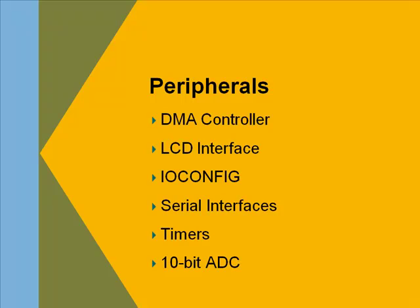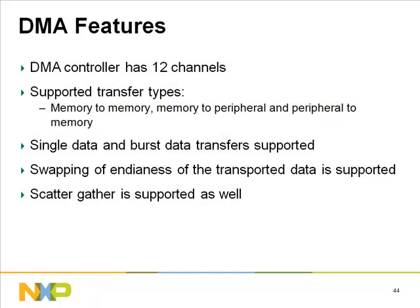The 12-channel DMA supports memory-to-memory, memory-to-peripheral, and peripheral-to-memory transfer types. For memory-to-peripheral and peripheral-to-memory, flow is controlled by the peripheral. The controller supports single data transfers for all types and burst transfers for memory-to-memory. It supports swapping endianness of transported data for file reading or MP3 decoding, and supports the scatter-and-gather feature where two DMA channels gather data located in different areas of memory.